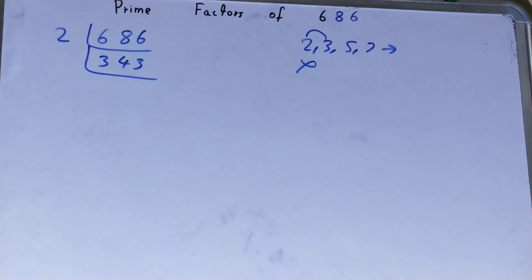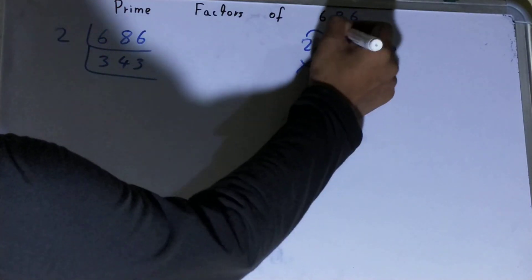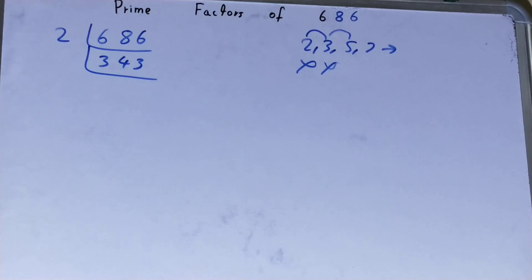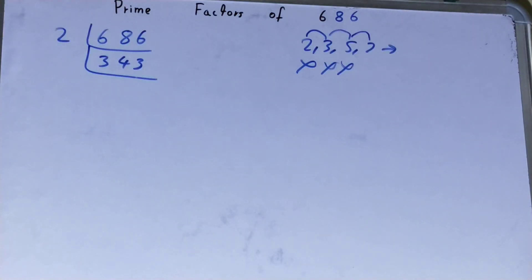Is 343 divisible by 3? Let's check: 3 ones are 3... No, it is not divisible by 3. Let's check it with 5. The last digit is neither 5 nor 0, so it is also not divisible by 5. Let's check it with 7.